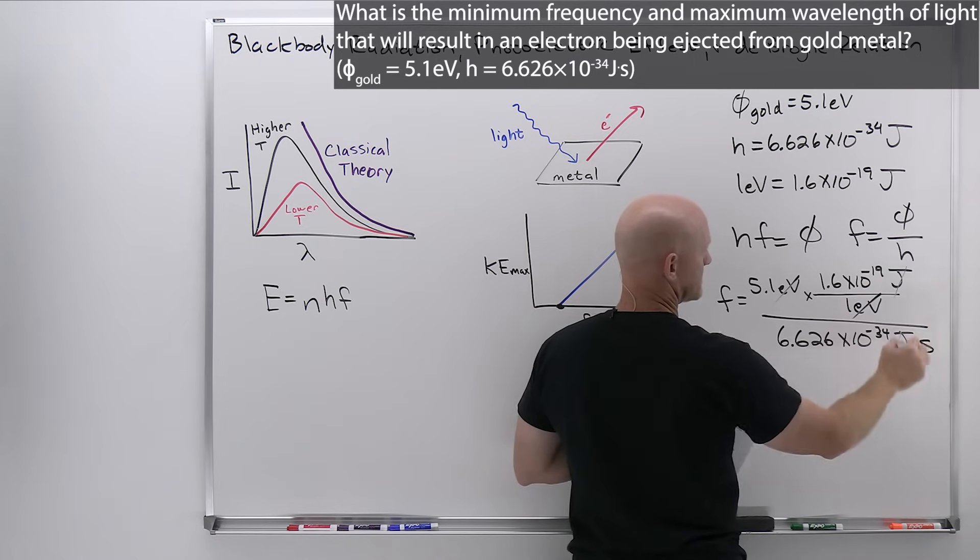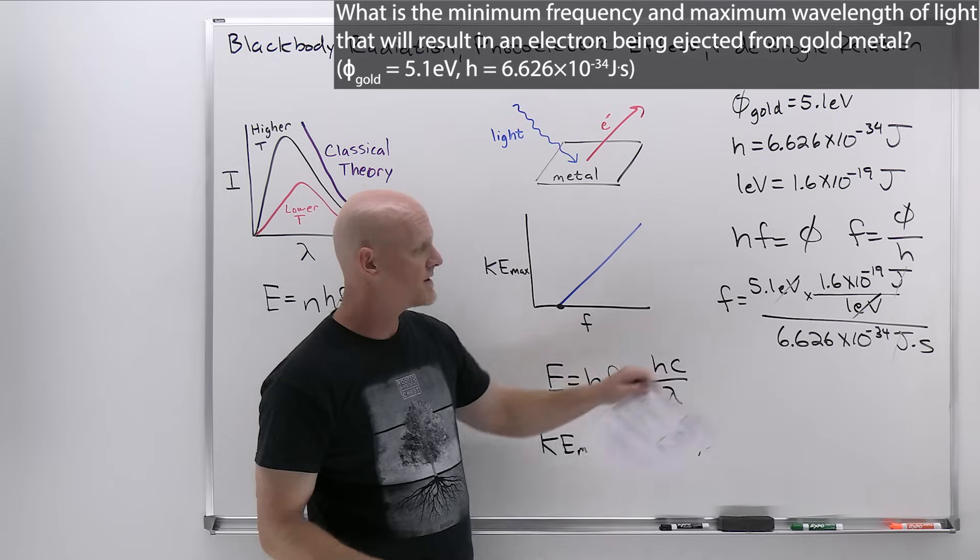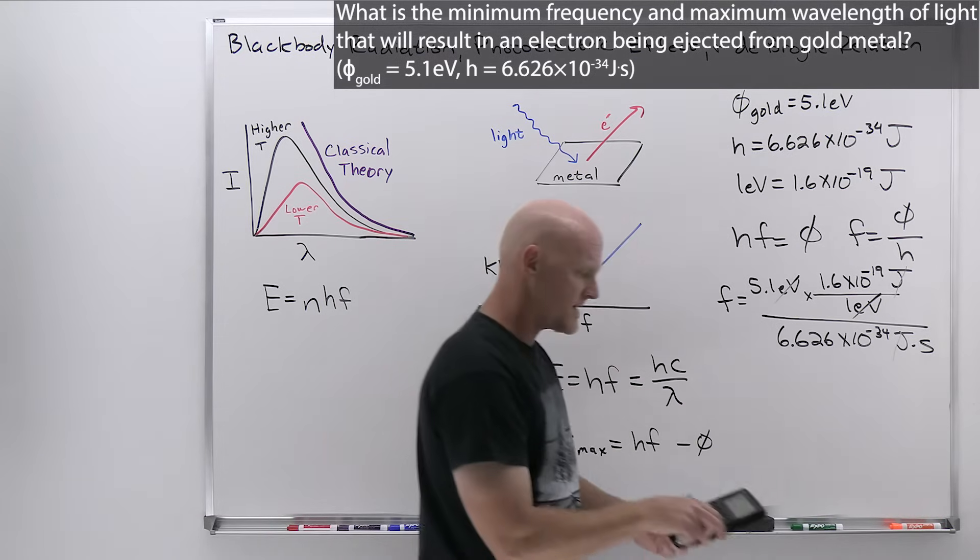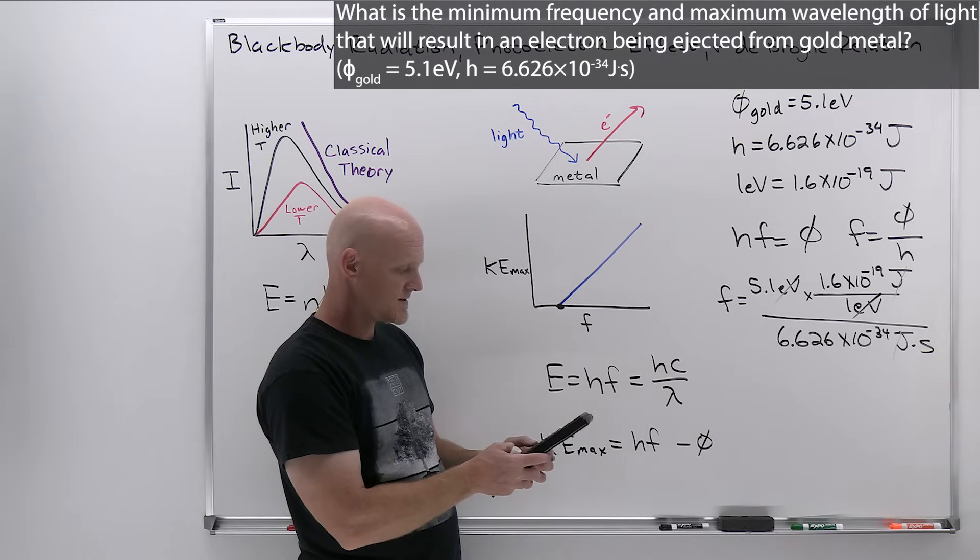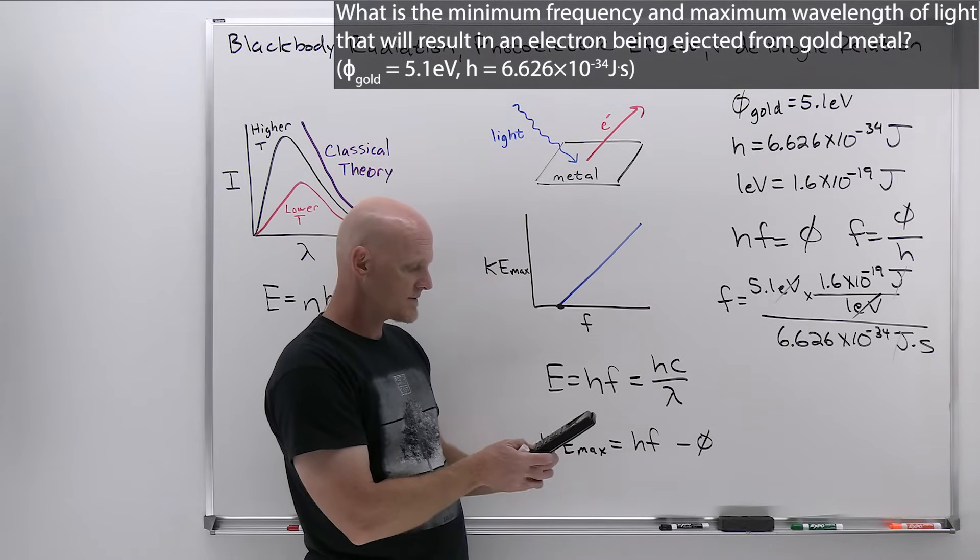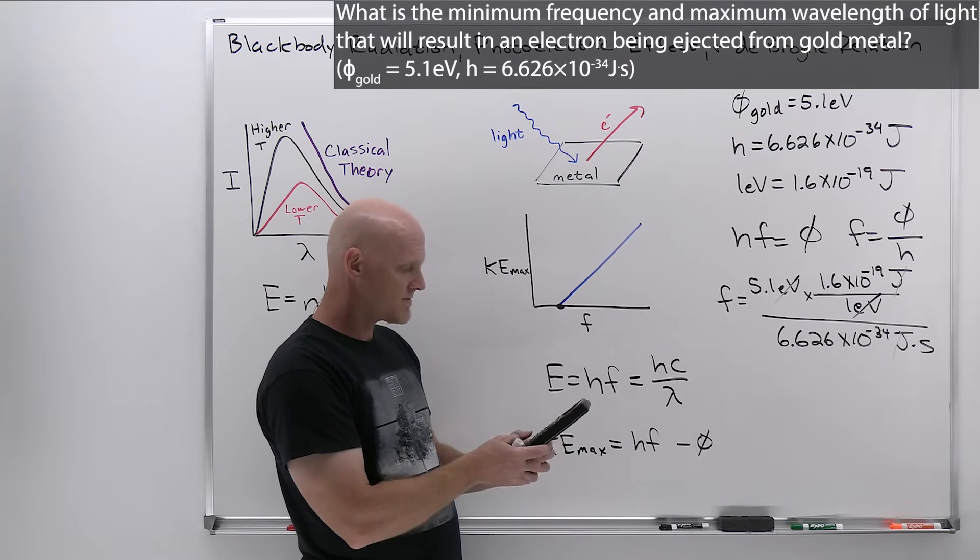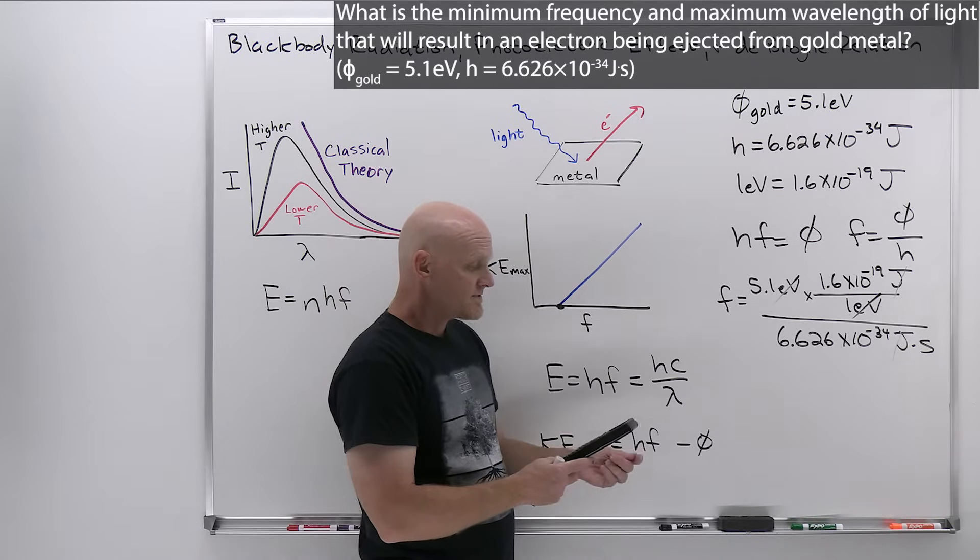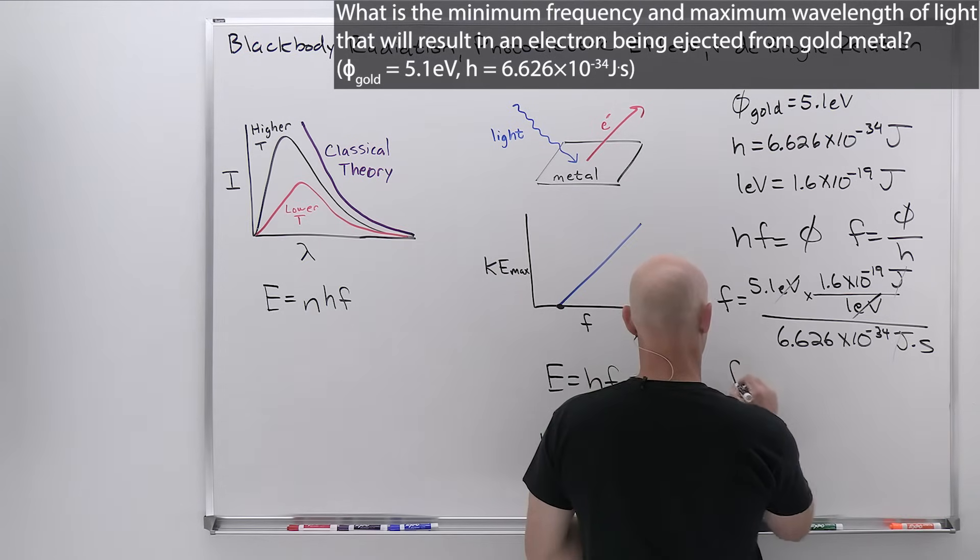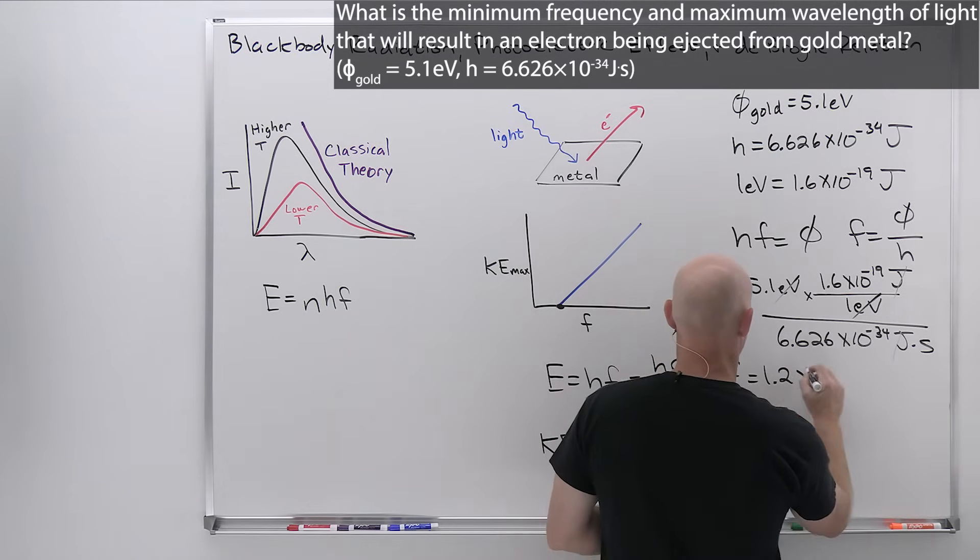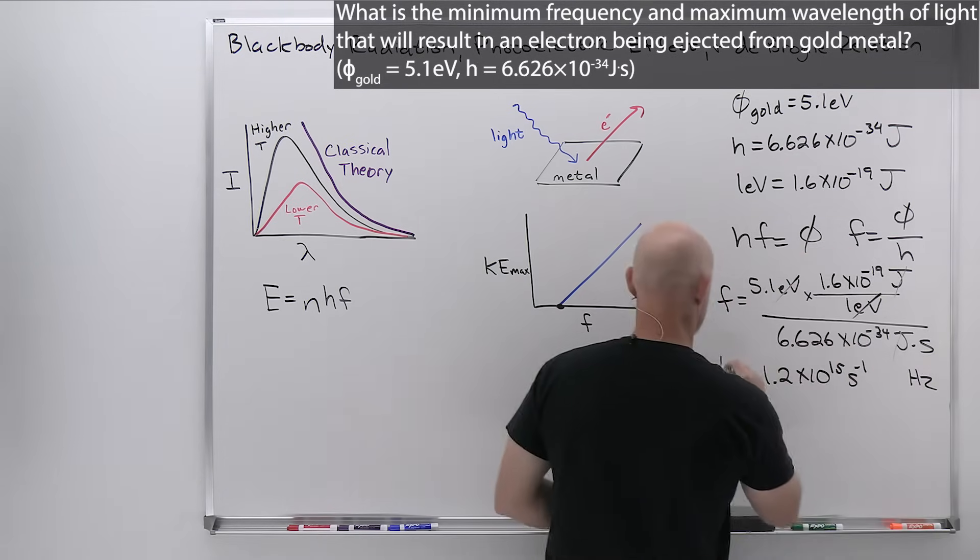Our work function is 5.1 electron volts. We could convert this to electron volts or convert this to joules. I'm going to choose to convert electron volts to joules here. We're going to have 1 electron volt is equal to 1.6 times 10 to the negative 19 joules, cancel out our electron volts, and then divide it all by Planck's constant, 6.626 times 10 to the negative 34 joule seconds. That'll cancel out the joules and we'll have units of per seconds or hertz. So we'll let our calculator do the heavy lifting. 5.1 times 1.6 e negative 19, divided by 6.626 e negative 34. And rounded to two sig figs, I'm going to get 1.2 times 10 to the 15th seconds to the minus 1 or hertz.